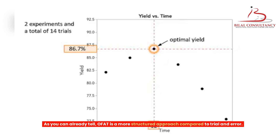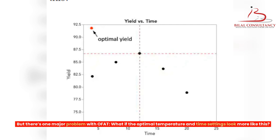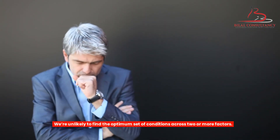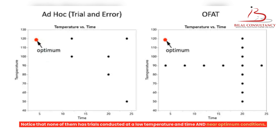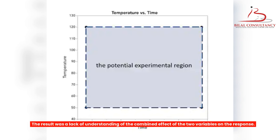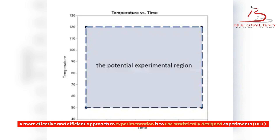OFAT is a more structured approach compared to trial and error, but there's one major problem: what if the optimal temperature and time settings look different from what we found? We would have missed the true optimal settings. OFAT's key con: we're unlikely to find the optimum set of conditions across two or more factors. Notice that neither trial and error nor OFAT had trials conducted at low temperature and time near optimum conditions. The problem: we didn't simultaneously change settings of both factors, and didn't conduct trials throughout the potential experimental region — resulting in a lack of understanding of their combined effect. The two factors did interact in their effect on the response. A more effective and efficient approach is to use statistically designed experiments — DOE.